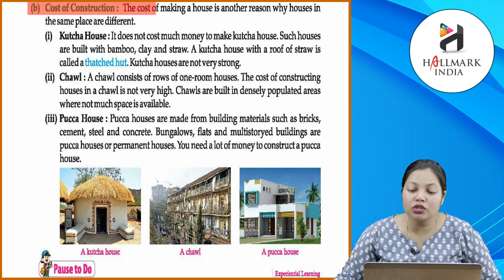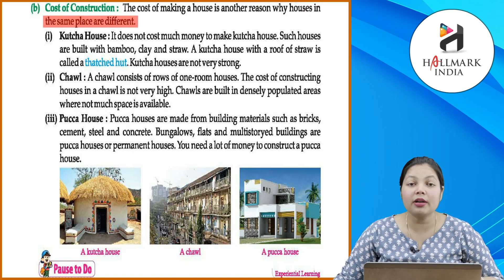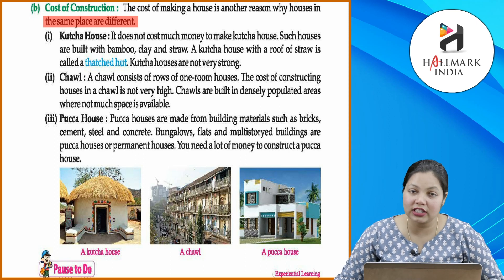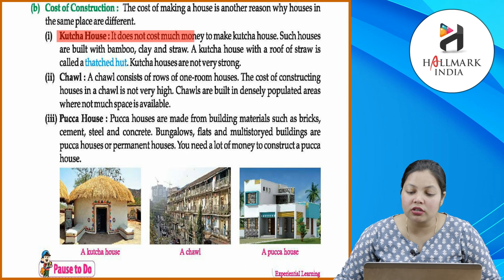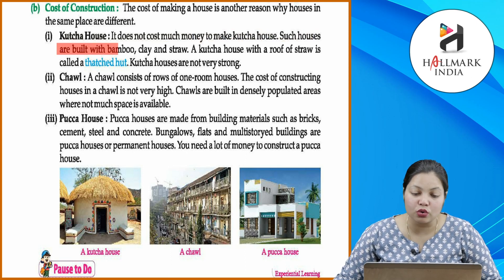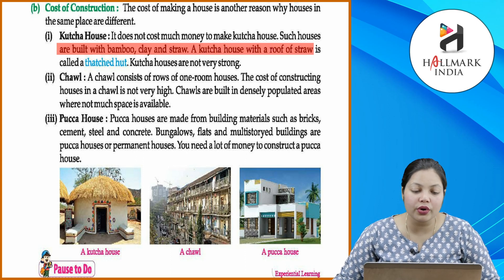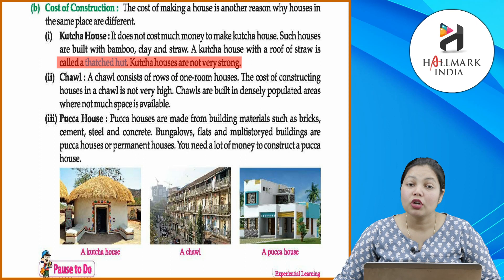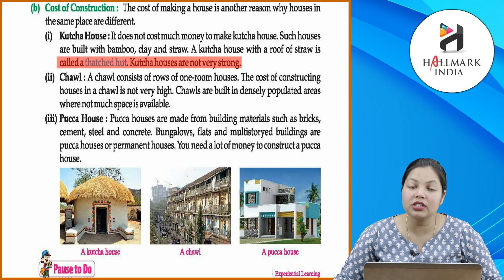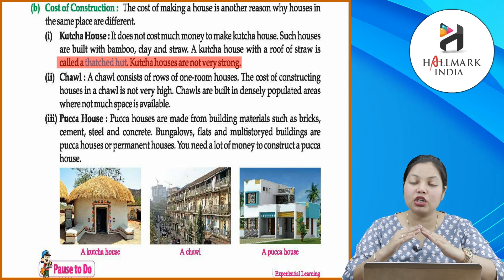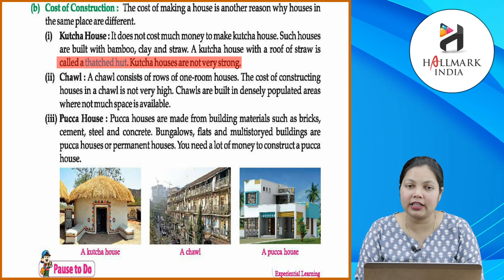Cost of construction: the cost of making a house is another reason why houses in the same place are different. It does not cost much money to make a kaccha house. Such houses are built with bamboo, clay and straw. A kaccha house with a roof of straw is called a thatched hut. Kaccha houses are not very strong. Kaccha houses jo hote hain, wo bamboo wood se banaye jaate hain. Inmein zyada paise nahi lagte aur easily reconstruct kiye ja sakte hain. Jo houses jinpe straws ka use kiya jaata hai, unhe thatched huts bola jaata hai.